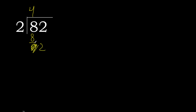Eliminate the 0 on this side. Bring down 2. 2 multiplied by 1 is 2, which is not greater. 2 minus 2 is 0.